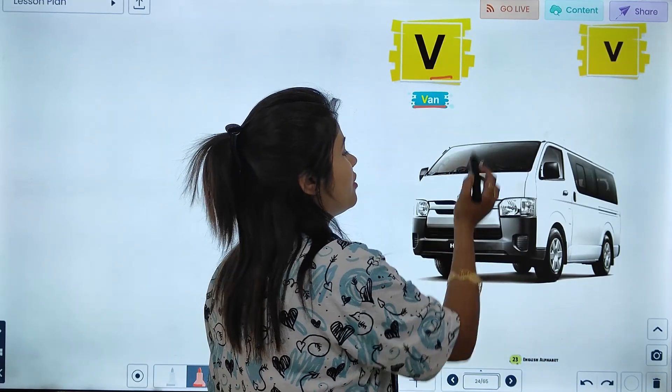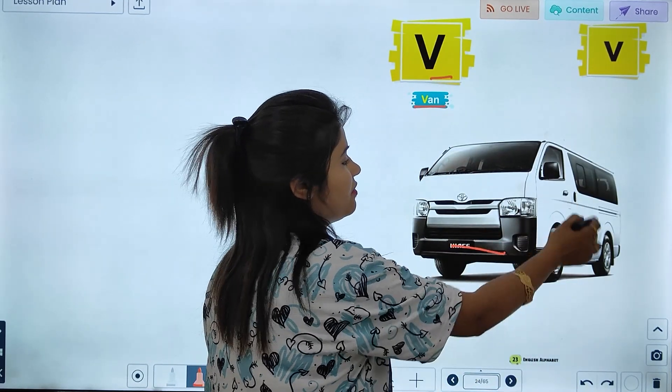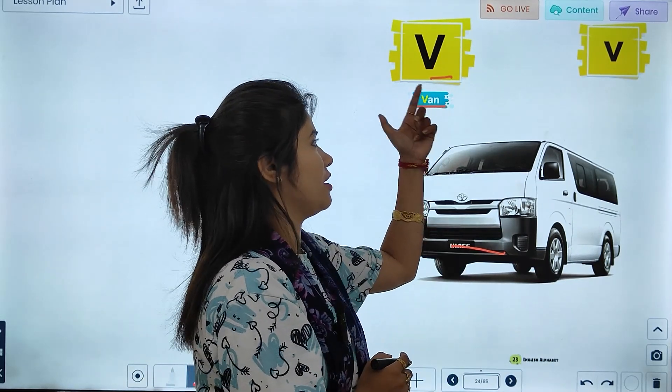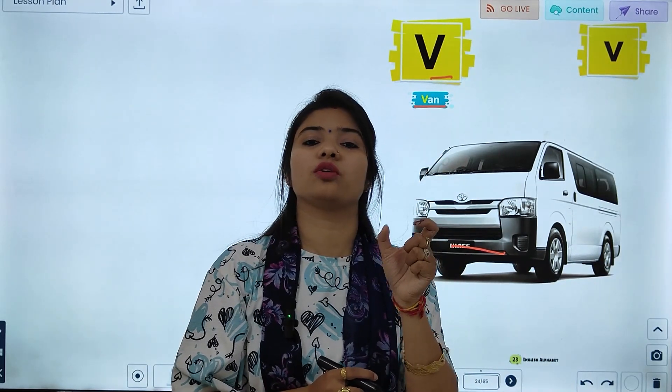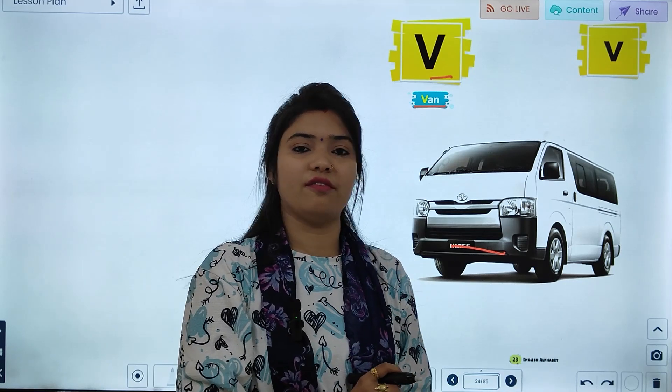V, V for Van. What is this? Van. So, Van, the word Van starts with which letter? V. That means V for Van.